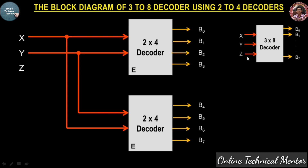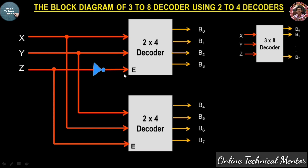For the third input z of the 3-to-8 decoder, we use the enable lines of both decoders. The z input is connected directly to the enable of the lower decoder, and connected through an inverter to the enable of the upper decoder. This completes the 3-to-8 decoder implementation using two 2-to-4 decoders.